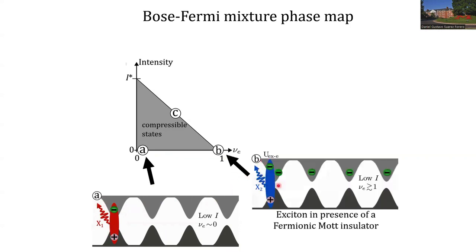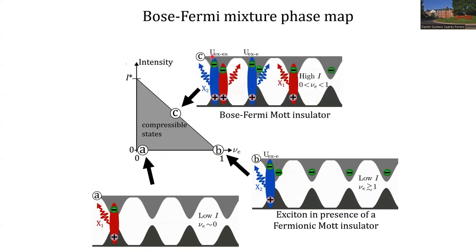This exciton can now be in the presence of a fermionic Mott insulator among the electron population of the system. The energy required for the formation of this exciton is a factor U above the excitonic energy of this case, because the exciton has to overcome the repulsive energy between particles in one single lattice site. We can also have a mixture between excitons and electrons with repulsive interactions between two excitons in one lattice site, or an exciton and an electron in the same site. The interplay between these two parameters creates a phase map where the compressible states are in the center and along this line we have the formation of Mott insulating states.